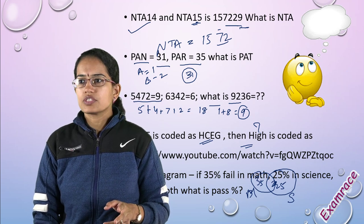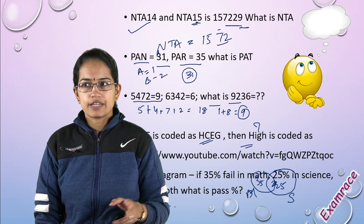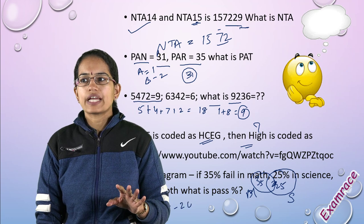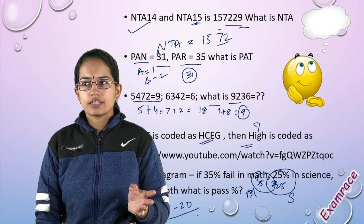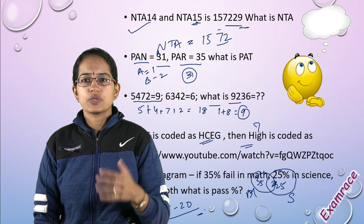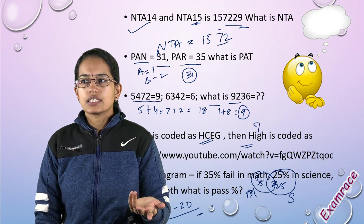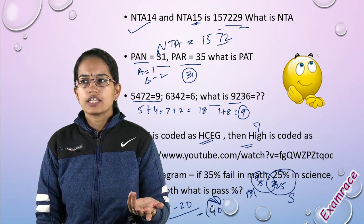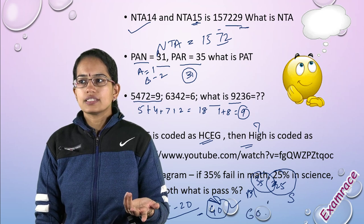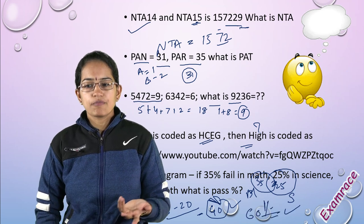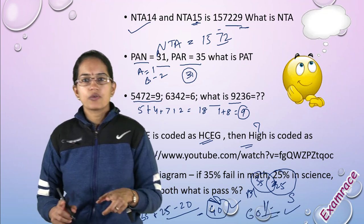While solving, we do 35 plus 25, that's the total number of failed students, minus the common students who failed in both. So 35+25 equals 60, minus 20 equals 40. So 40 students failed, meaning 60% passed.